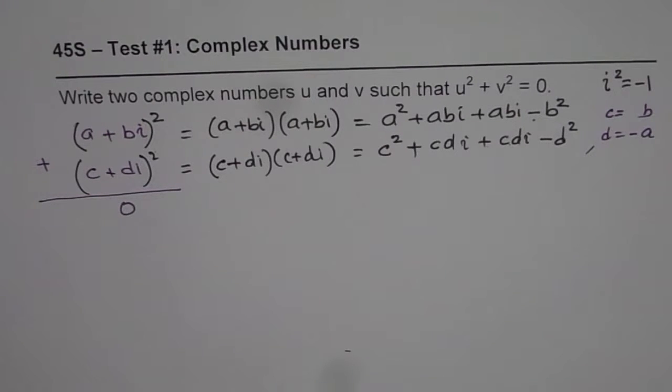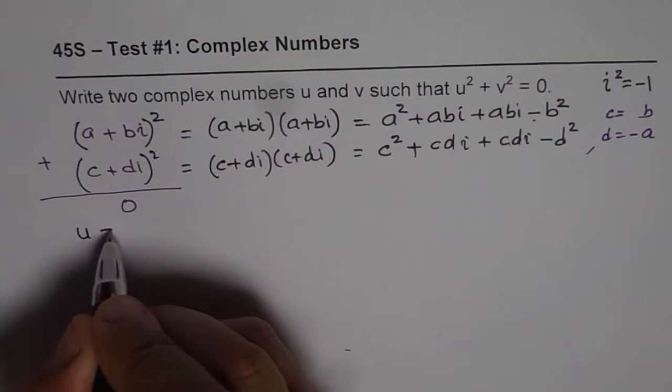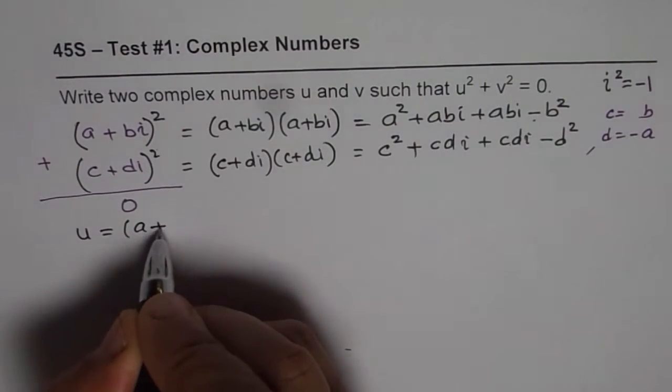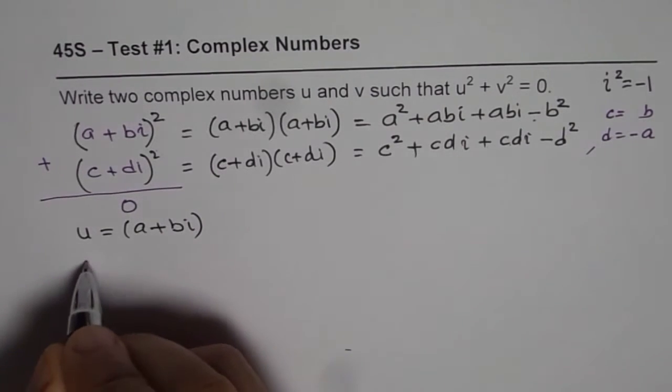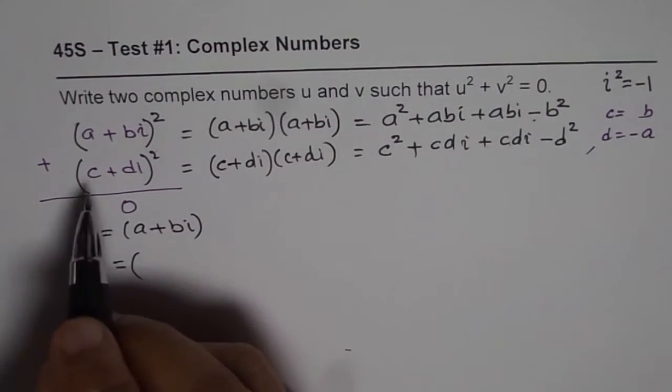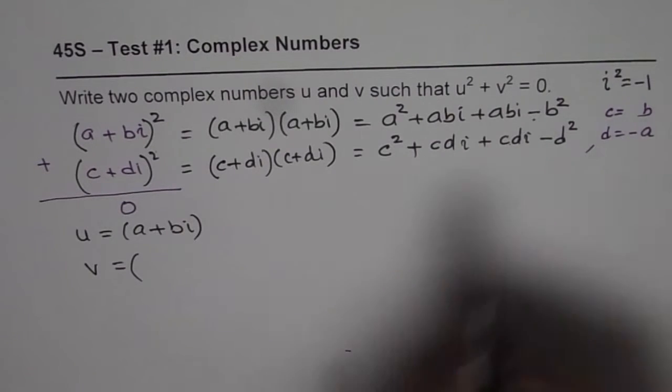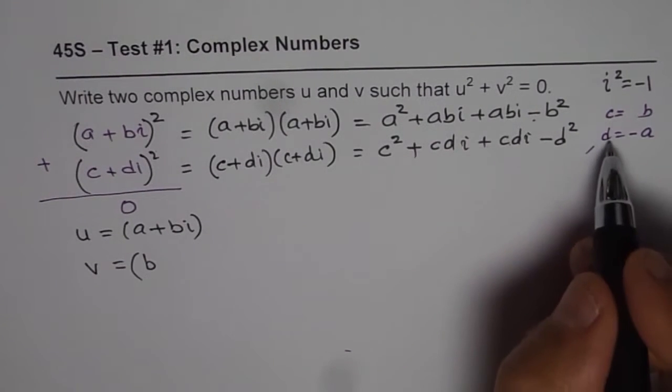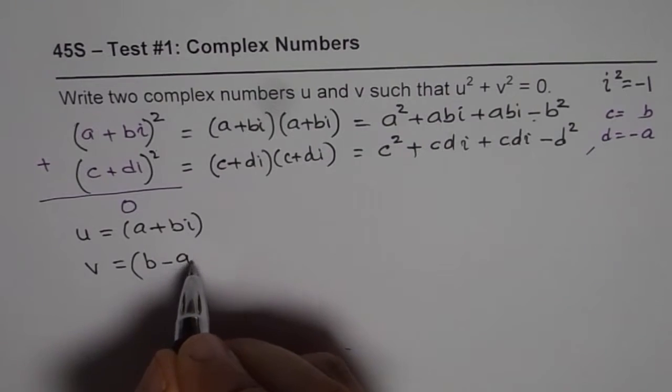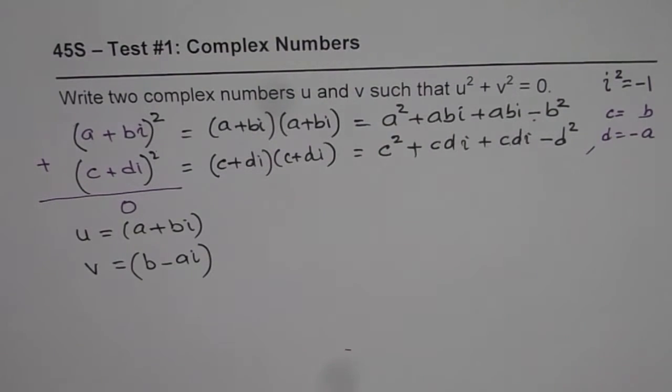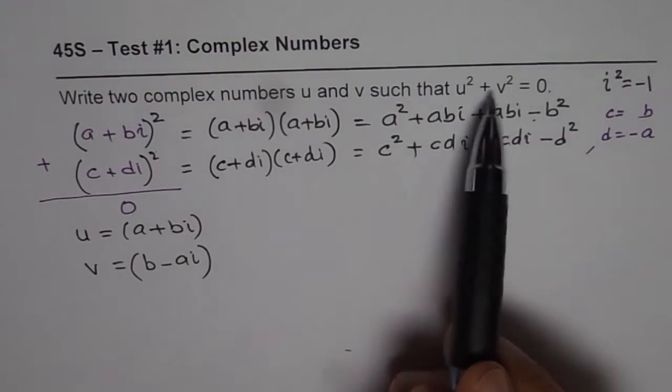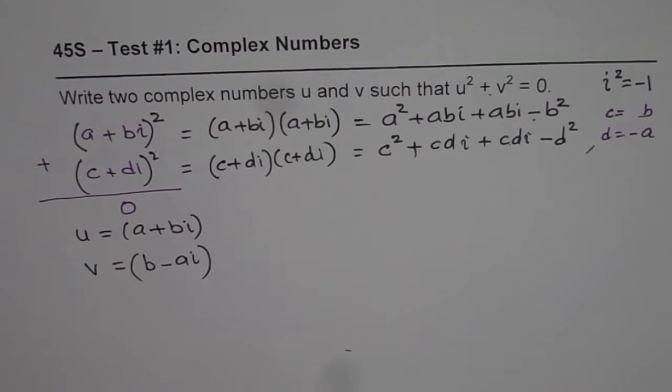So, that is kind of learning from our equation. And then, we will try it out. We say, let u = a + bi and v = b - ai. Then, I think some of the squares will be 0. So, these are my values for u and v. So, that is my answer.